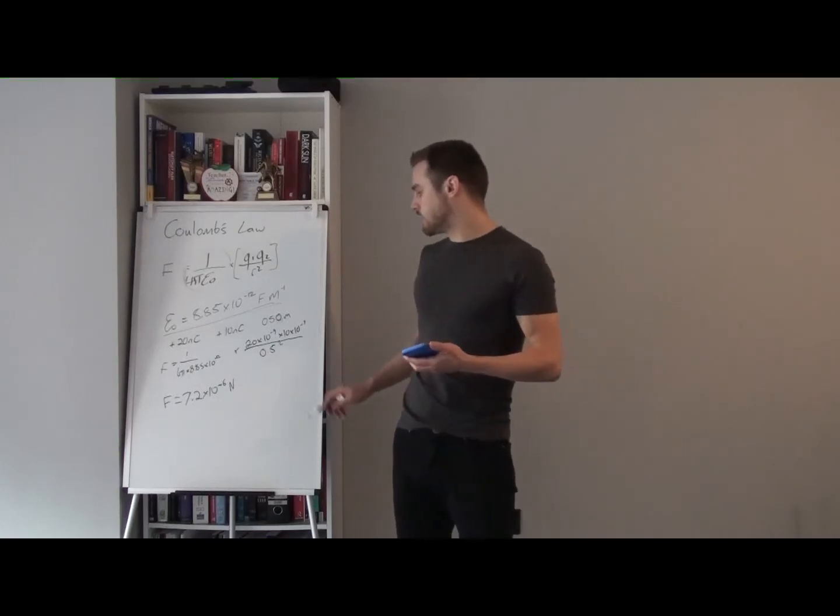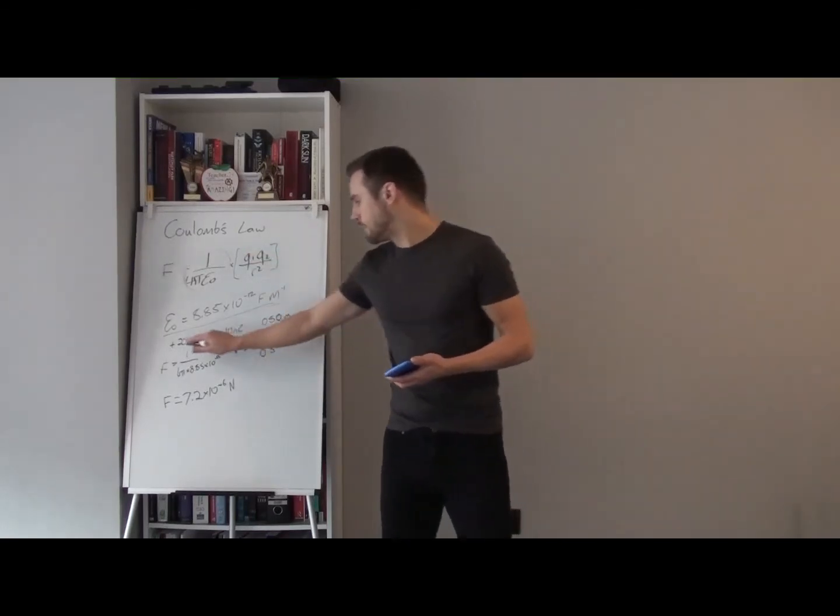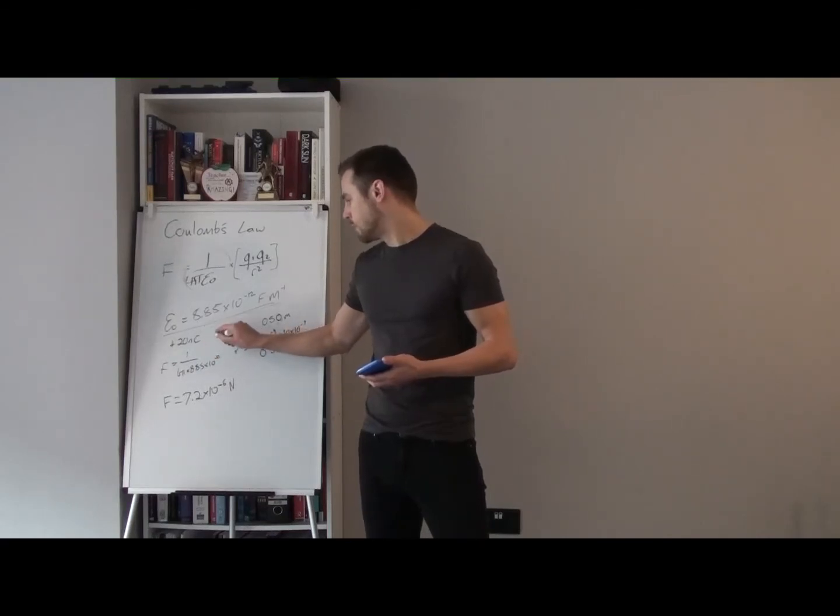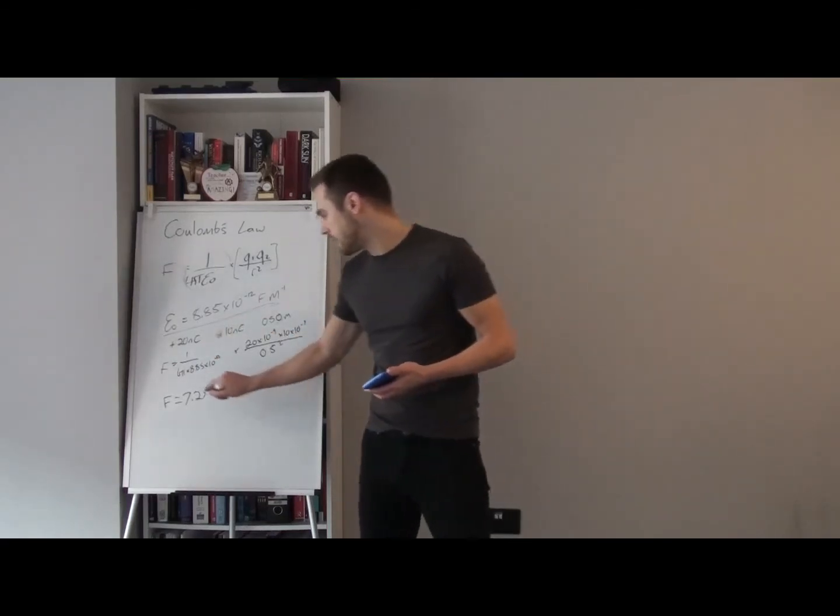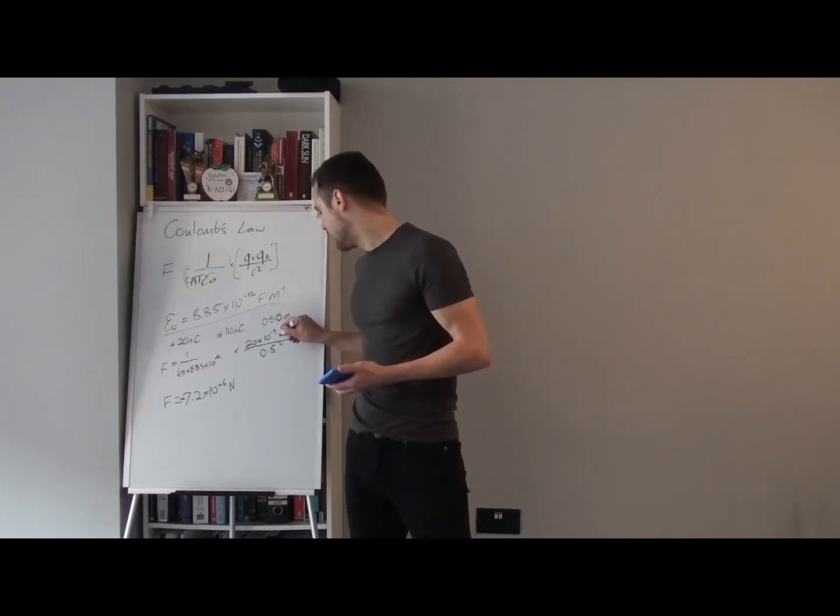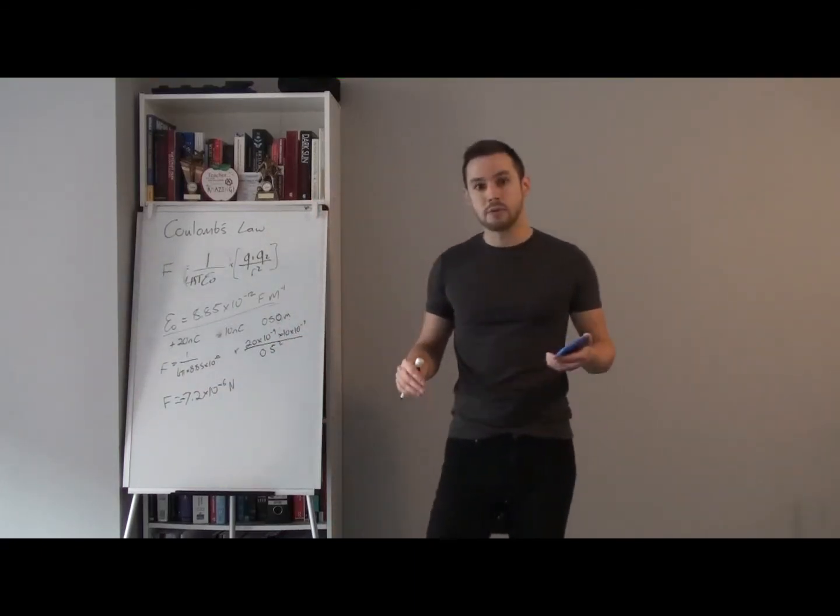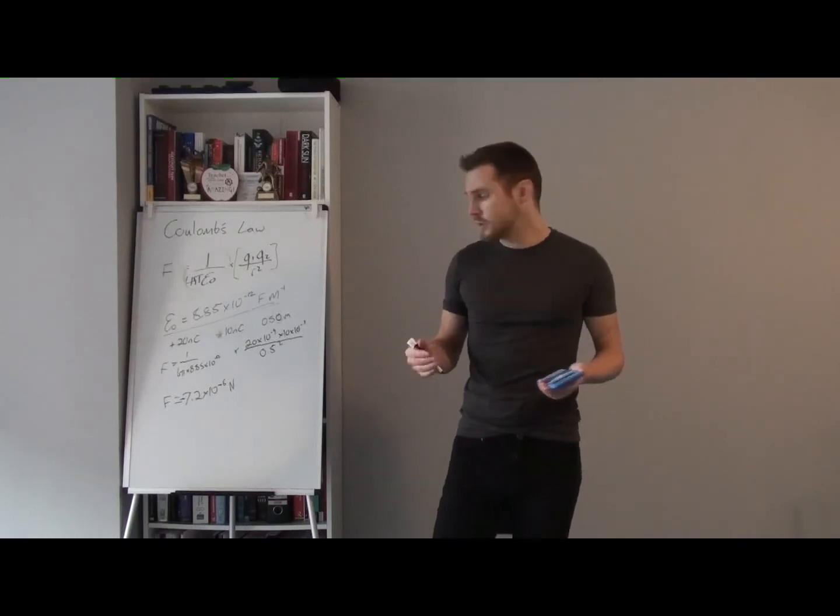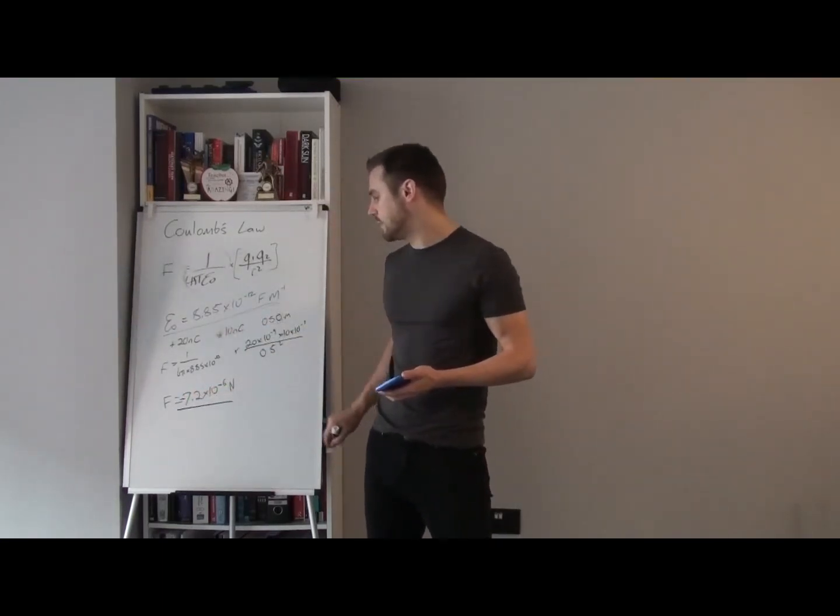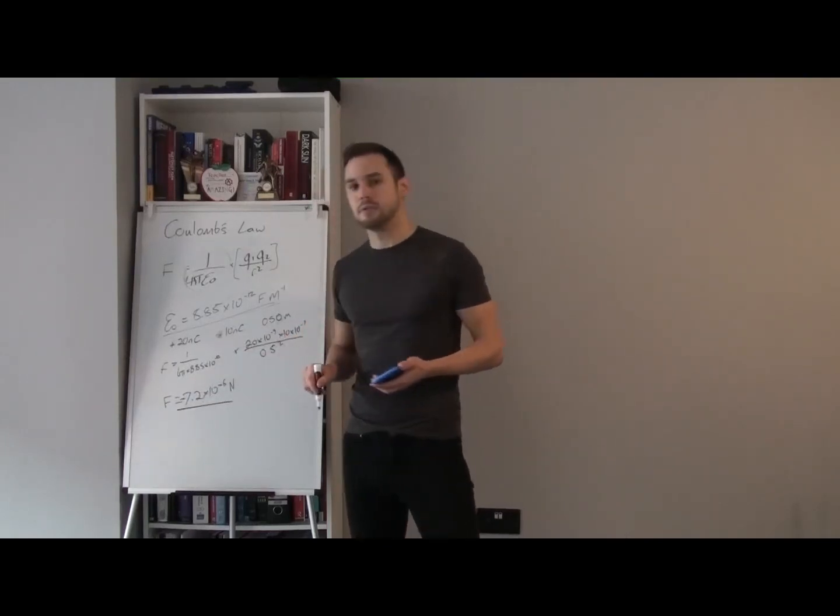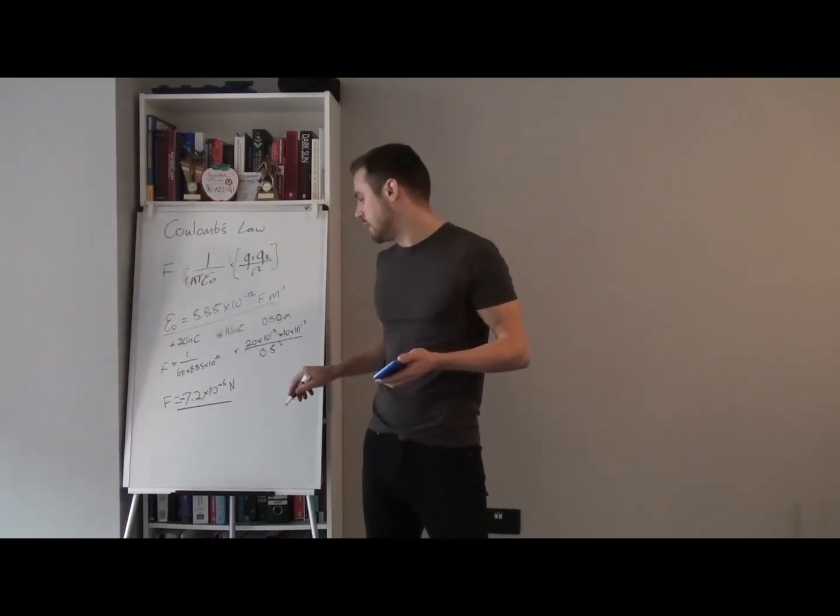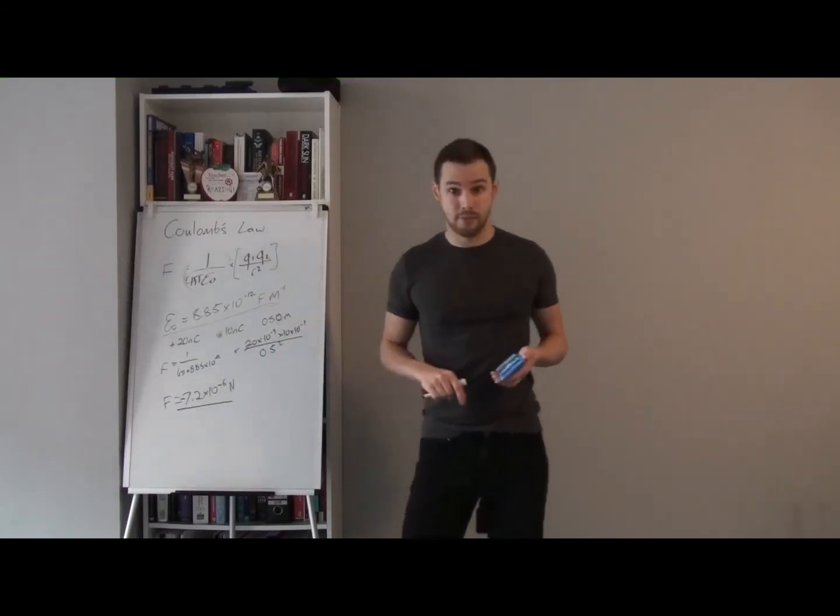Now, lastly, I want you to imagine, instead of being positive 20 and positive 10, what if this was negative? Well, if this was negative, we'd find that the force between them was negative. And if that was the case, what we would find is that the force is attractive. So you notice that we have an attractive force when one of them is negative, and that's given by a negative force. Meanwhile, you might have a repulsive force when the two are positive, and that's why you would have a positive force.